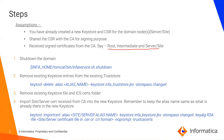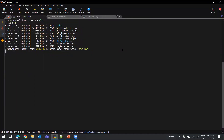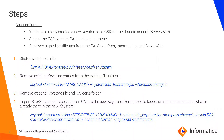To start with the configuration, the very first step is to shut down the domain. For that, we will be using the InfaServices shutdown command. I have logged into my Informatica domain server and run the InfaServices shutdown command.